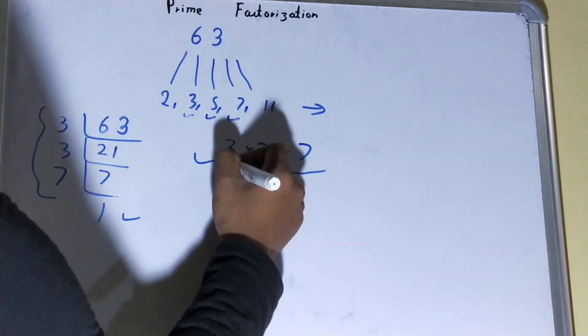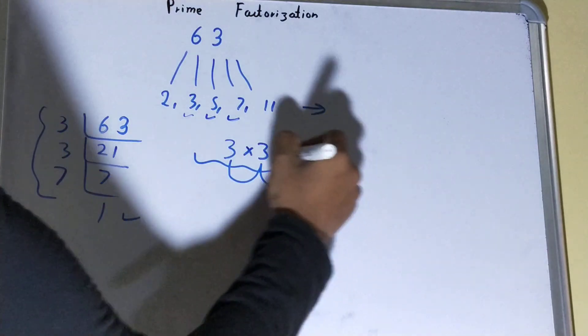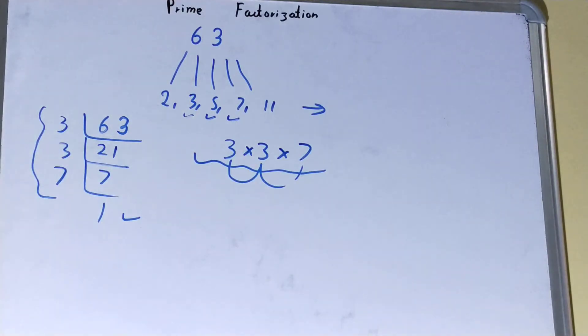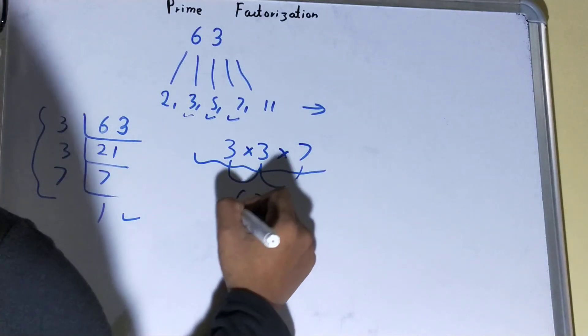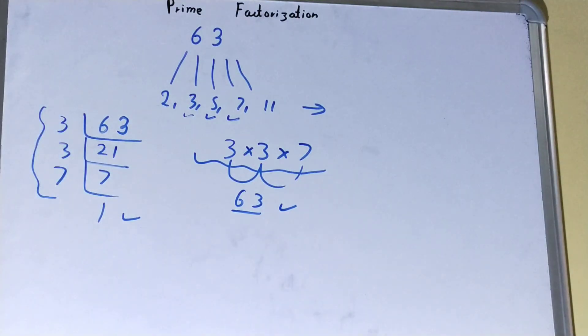That is 3 into 3 is 9, and 9 into 7 is 63. That is you will get the number back again. If you are getting the number back again, your answer or your calculation is fully correct. If you are not getting it, then you need to recheck your calculation.